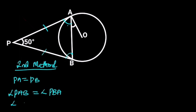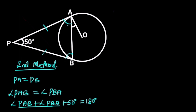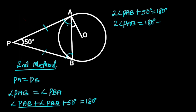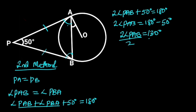In triangle PAB, angle PAB plus angle PBA plus 50 degrees is equal to 180 degrees. Since angle PAB and angle PBA are equal, we can say that 2 times angle PAB plus 50 degrees is equal to 180 degrees. So 2 times angle PAB equals 180 degrees minus 50 degrees, which is 130 degrees. Dividing both sides by 2, angle PAB equals 65 degrees.